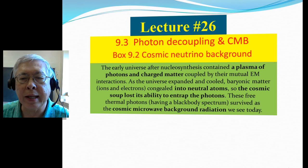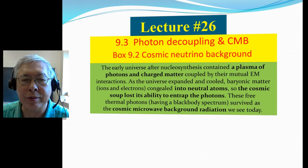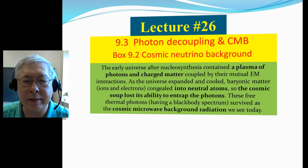In the early universe, after nucleosynthesis, it contained a plasma of photons and charged matter coupled by their mutual electromagnetic interactions—like helium and hydrogen. They are charged, they are ions.